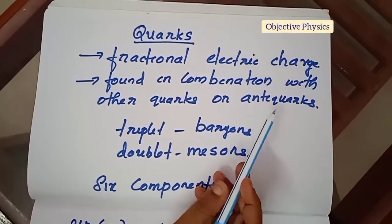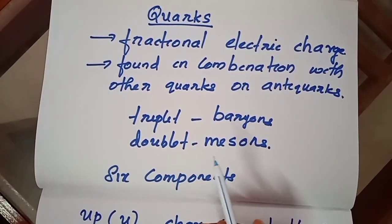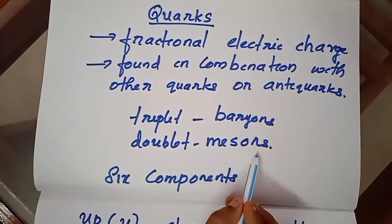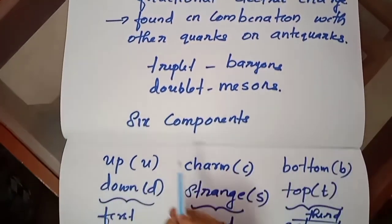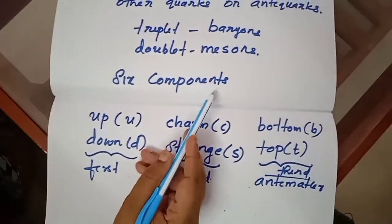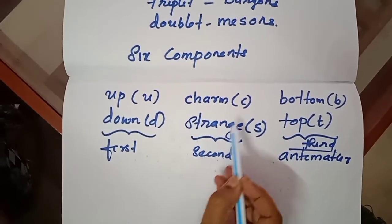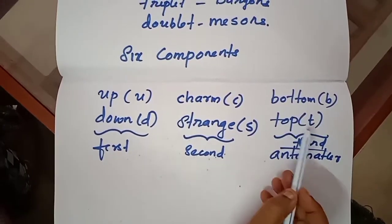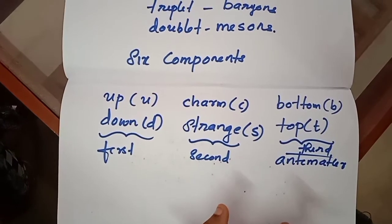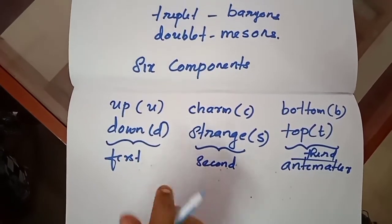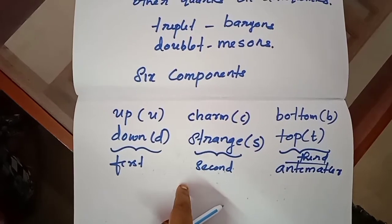In matter, quarks form triplets called baryons and doublets called mesons. Quarks exist in six components: up (u), down (d), charm (c), strange (s), bottom (b), and top (t). These are known as quark flavors.